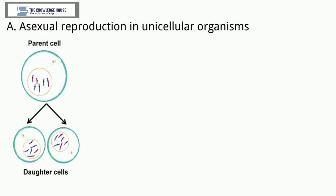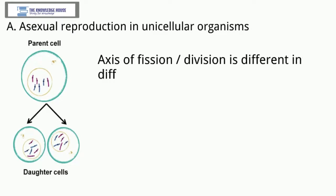In this process, the parent cell divides to form two similar daughter cells. Binary fission occurs either by mitosis or amitosis. Axis of fission division is different in different protists.